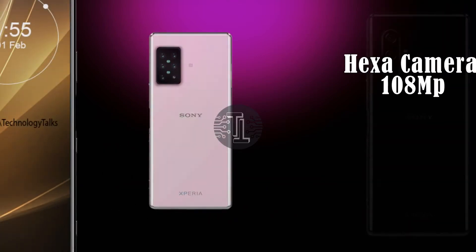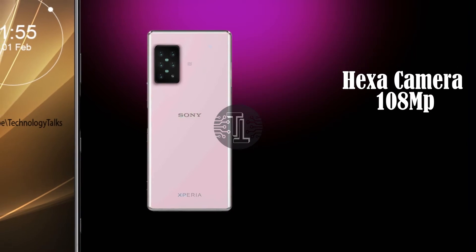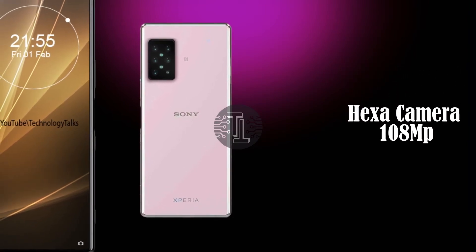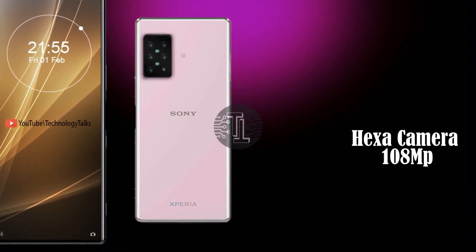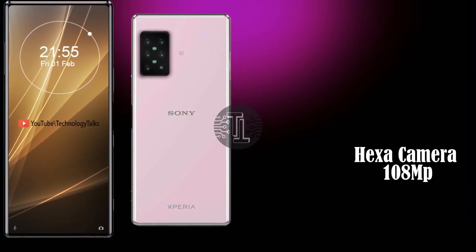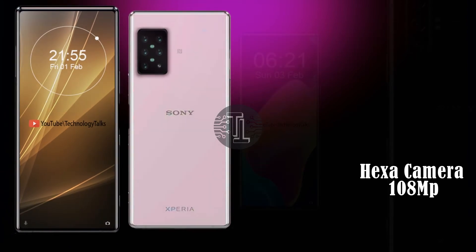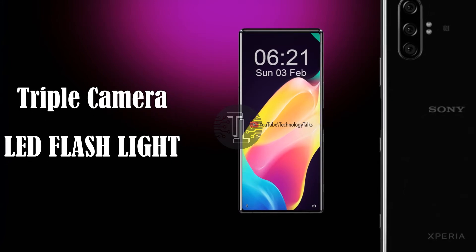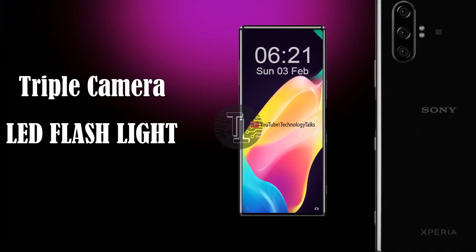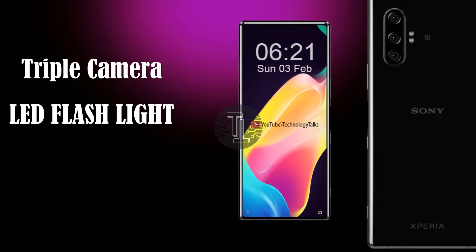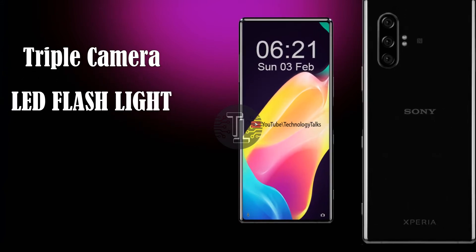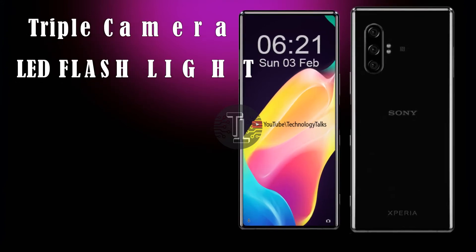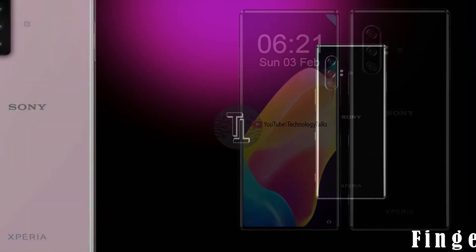Now, let's talk about the camera setup of both mobiles. The Xperia 6 contains the Hexa camera setup with two LED flash lights with which you can click awesome pictures, and also contains the 32 megapixel selfie camera. On the other hand, the Xperia 0 contains a 4-rear camera setup with dual flash LED lights which contains more power than the Sony Xperia 6 Hexa camera setup. This phone also contains the 32 megapixel selfie camera shooter.